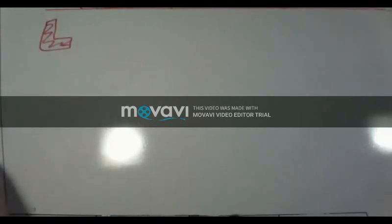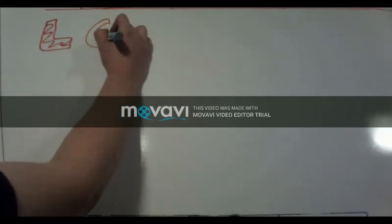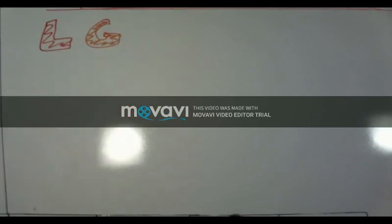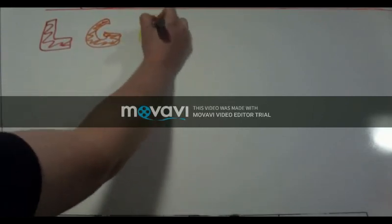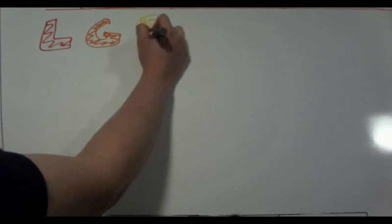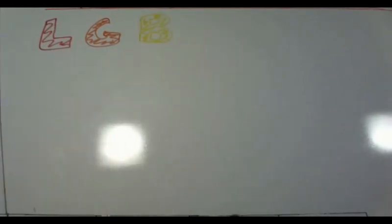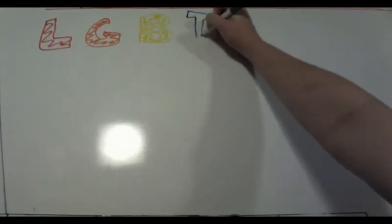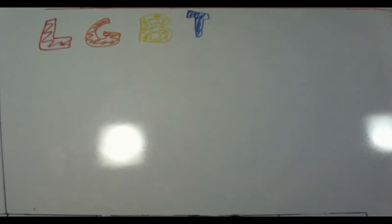L-G-B-T-Q-A-Plus. This is the acronym most commonly used to describe individuals who are, in some way, shape, or form, divergent from the straight, cisgender, monogamous person.